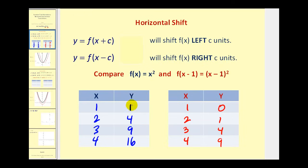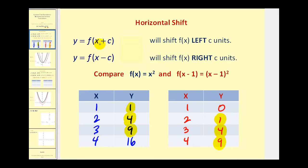Comparing the Y values of 1, 4, and 9, notice that for F of X minus 1, we have to increase X by 1 in order to get the same Y value. And when we increase X by 1, we're shifting the function to the right. So when we subtract a number from X, it moves to the right, and when we add a value to X, it shifts to the left.